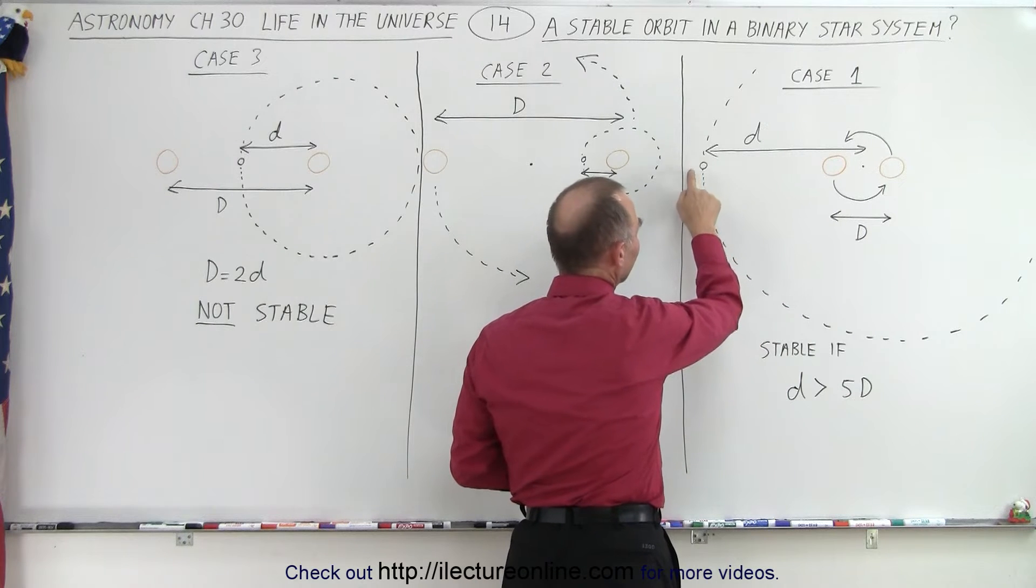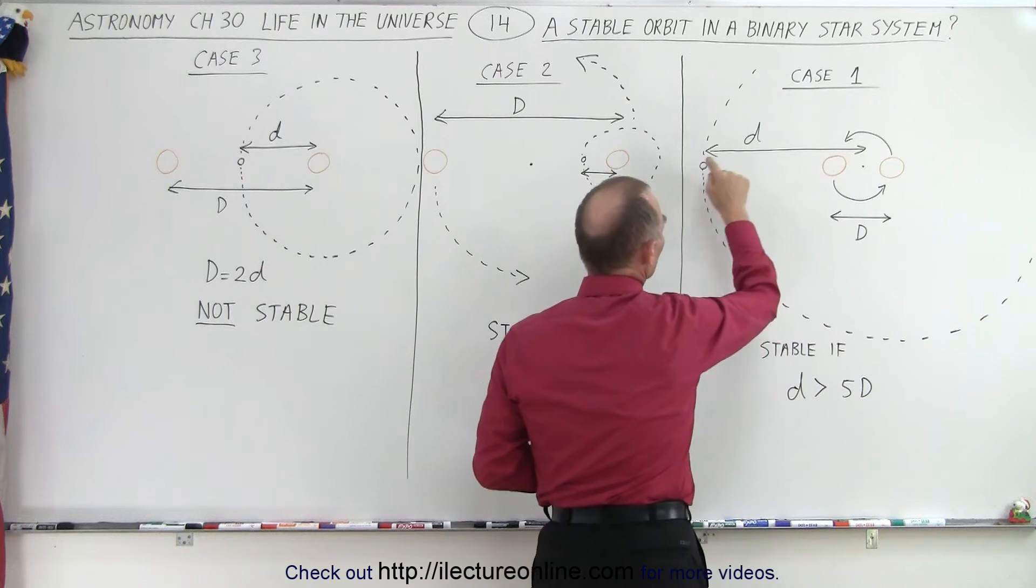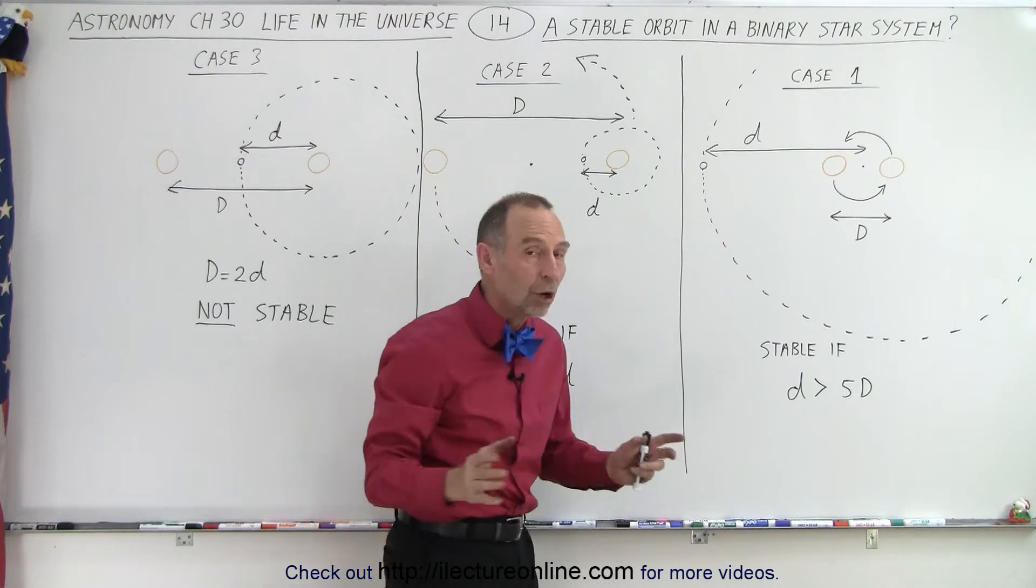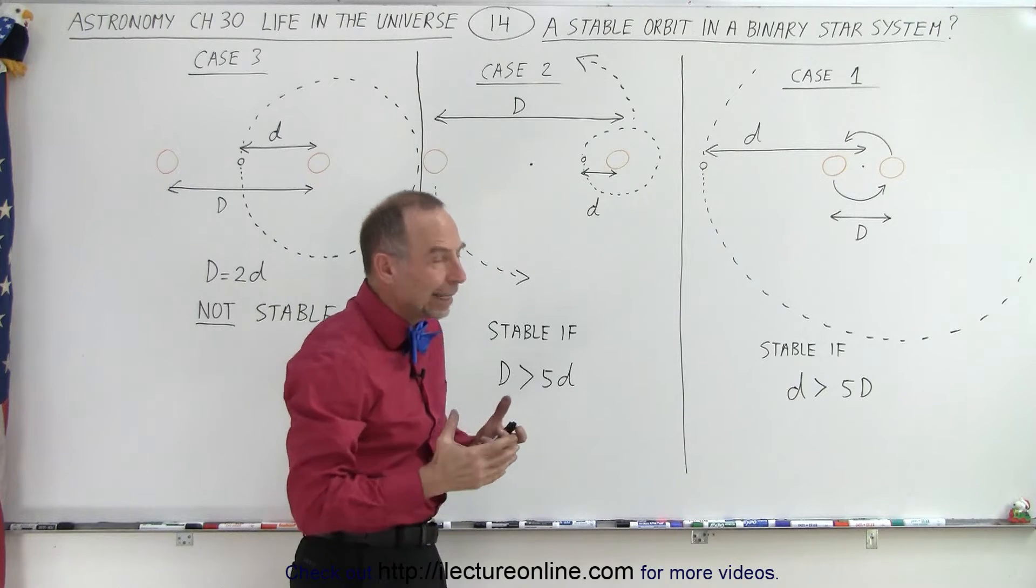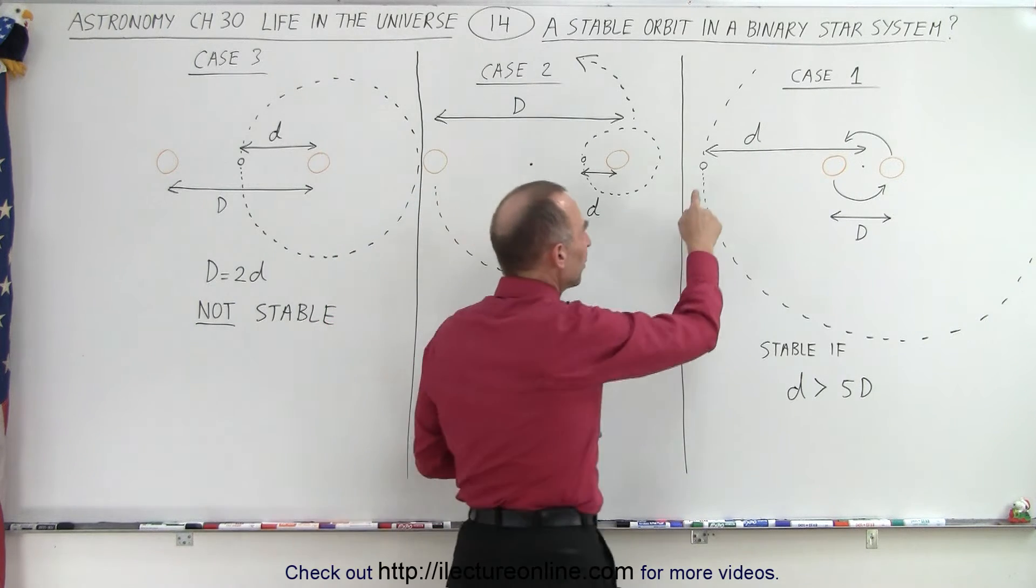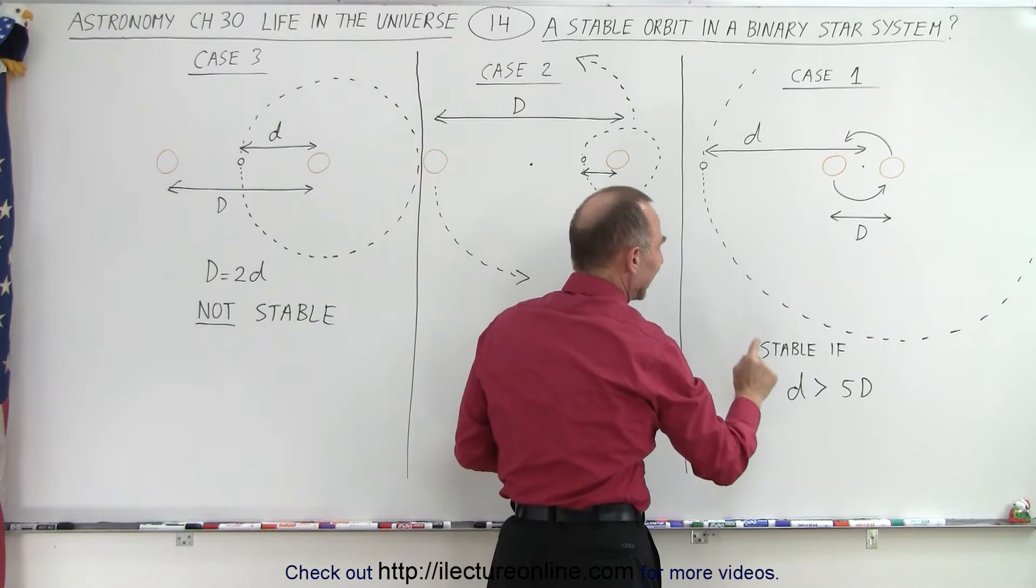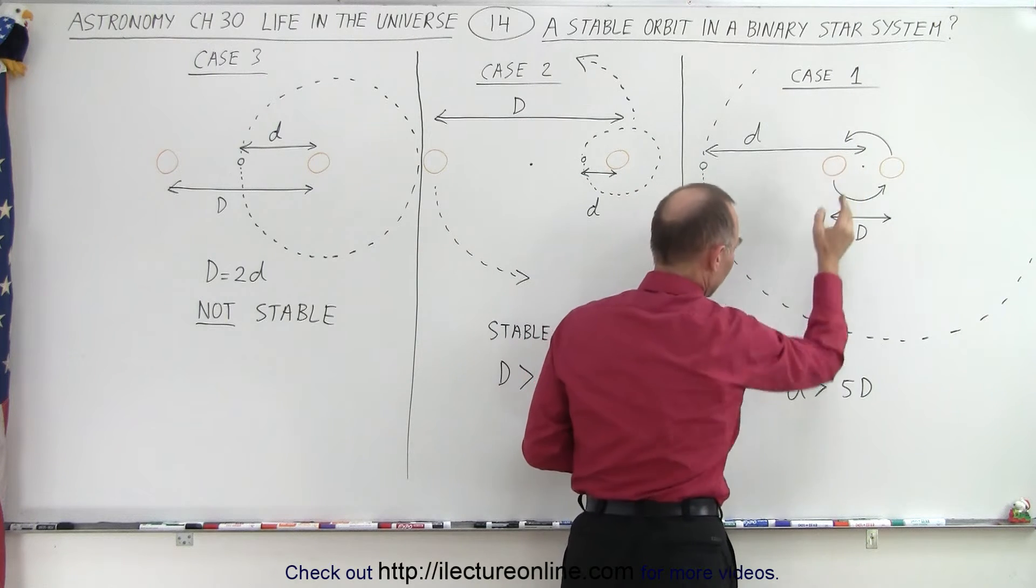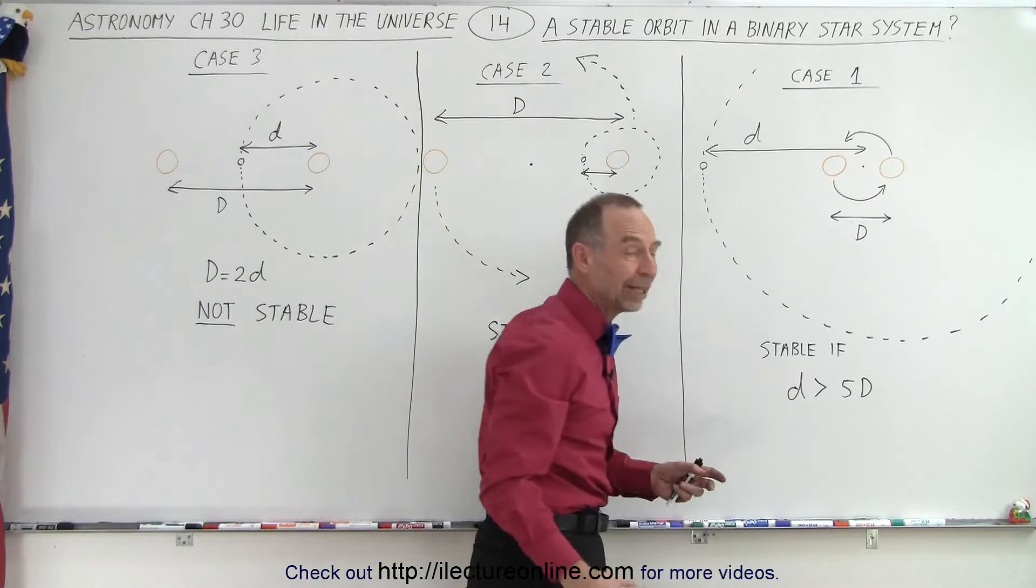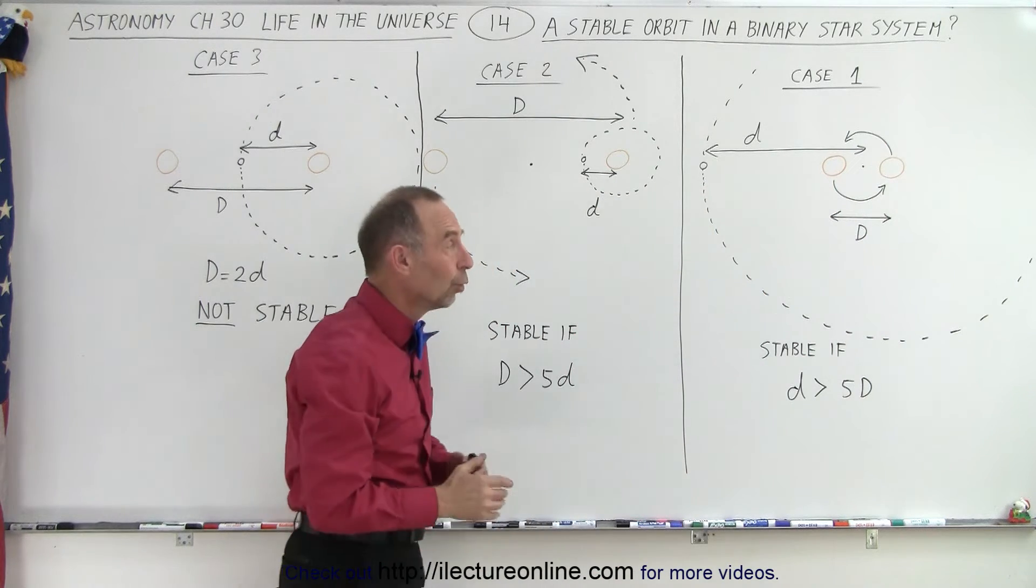And then let's say we have a planet which is far away from the two stars and we call the distance from the barycenter to that little planet little d. And as a kind of rough order of estimate, the orbit of this planet will be stable if the distance from the planet to the barycenter is at least five times the distance between the two stars. Then you would have a relatively stable orbit.